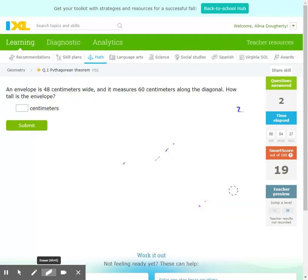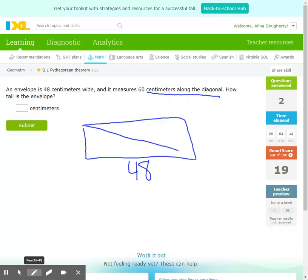An envelope is 48 centimeters wide and 60 centimeters along the diagonal. We know that envelopes are in the shape of rectangles, so they have right angles. How tall is the envelope? Oh, I forgot to put my 60. So if I label my legs A and B, my hypotenuse is C. Then I just substitute in for A squared plus B squared equals C squared. A squared is what I'm looking for. 48 squared equals 60 squared.